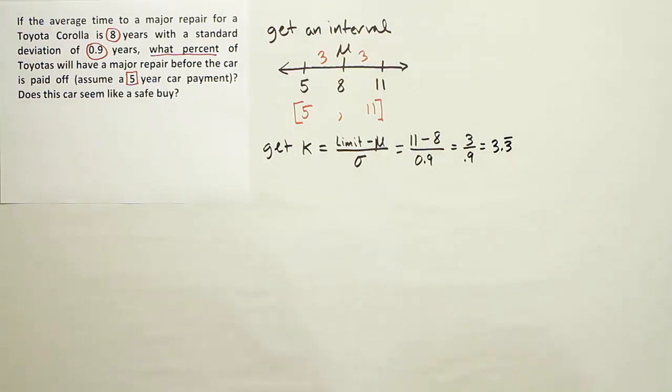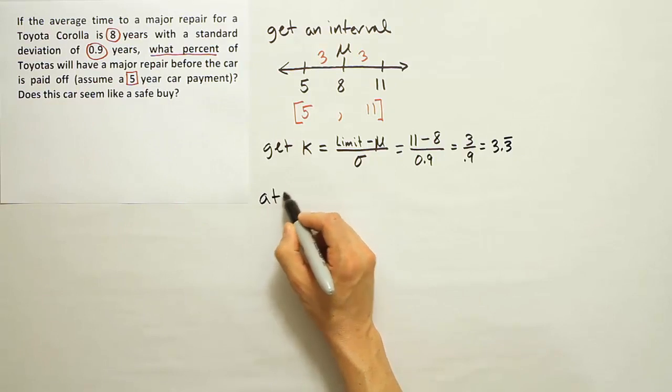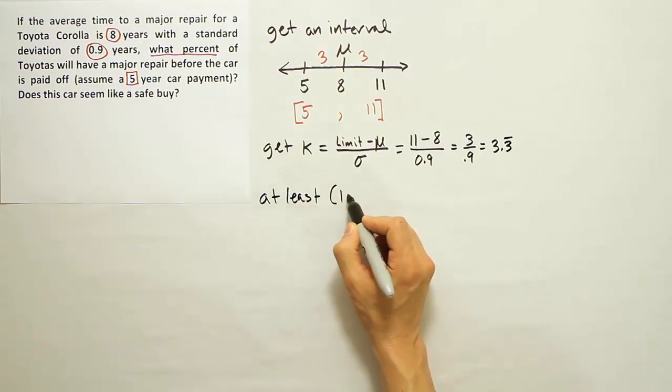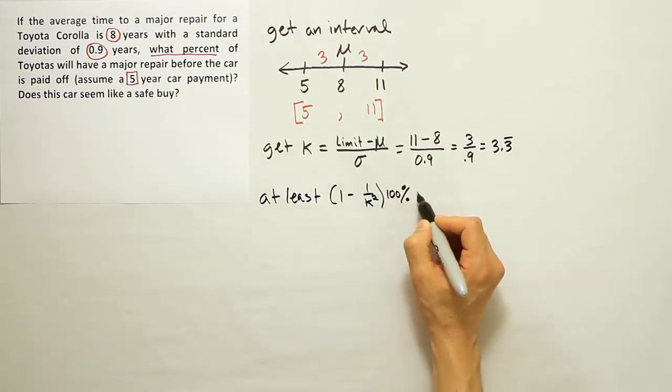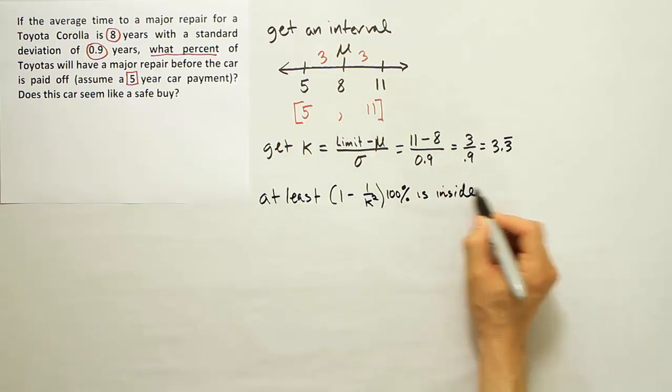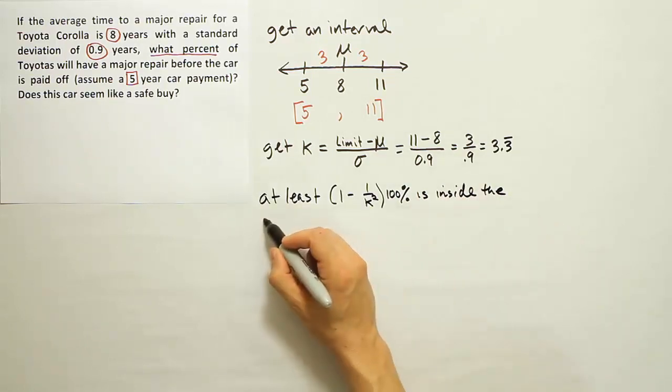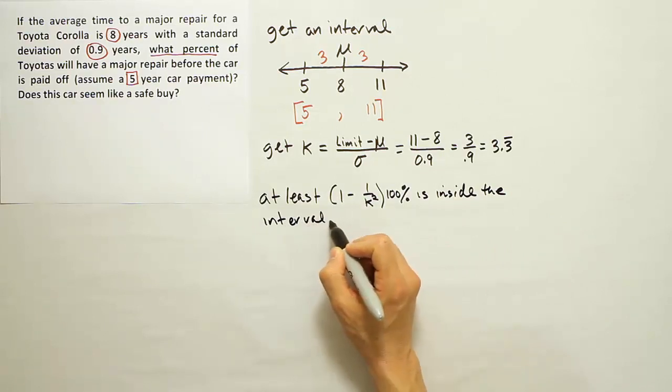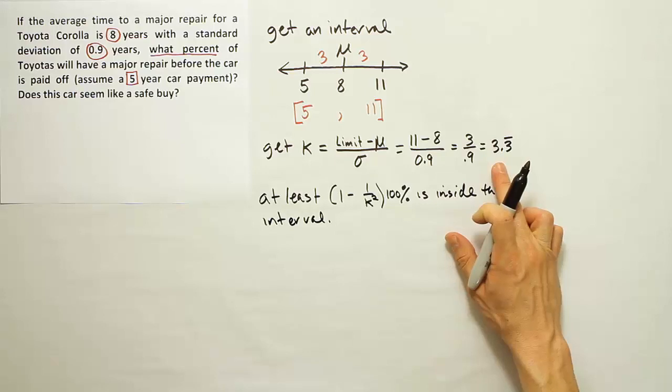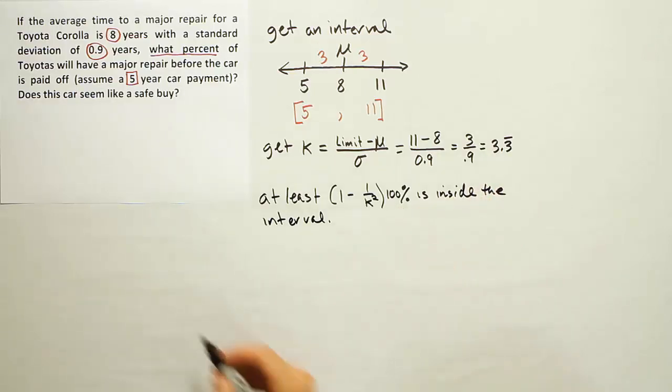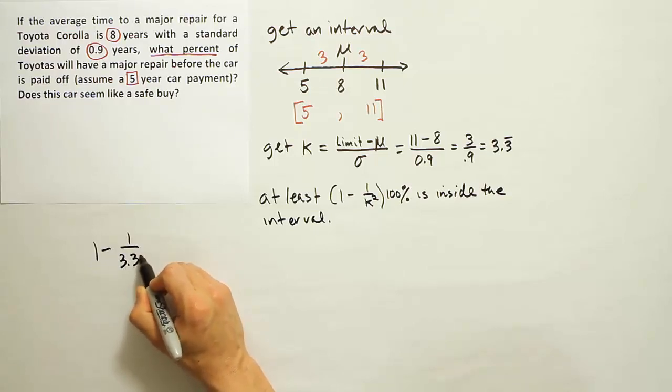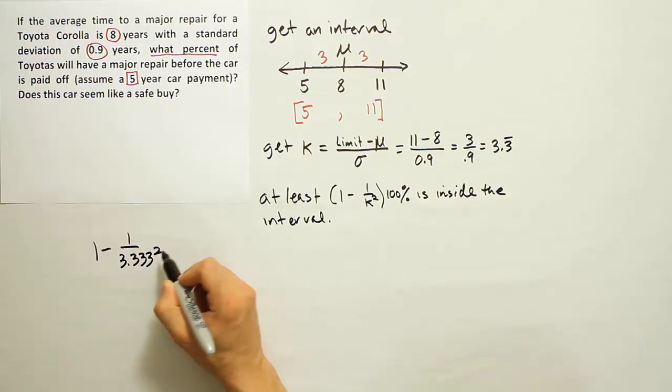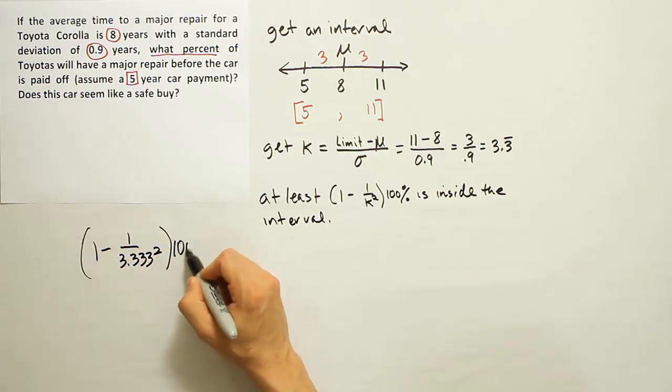Okay, now once we have that, we're going to use this formula: at least 1 minus 1 over k squared times 100% is inside the interval. Alright, well, that means for us that we want to put the 3.3 repeating in for k and see what that ends up giving us. So 1 minus 1 over 3.333 squared, let's say, times 100%.